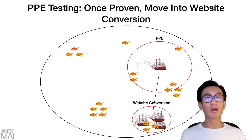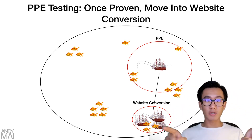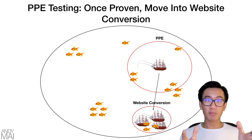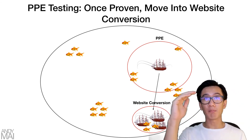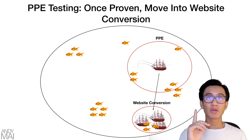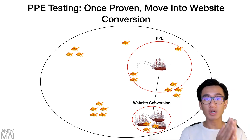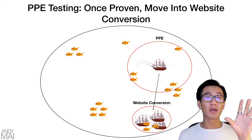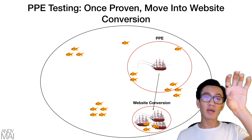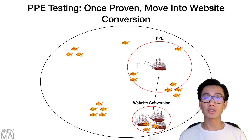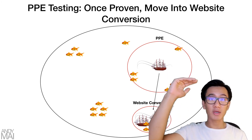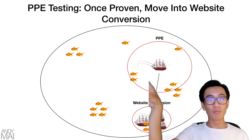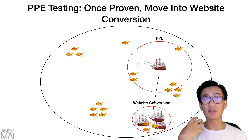That's why it's actually better to do PPE testing first. Put your ship into the 54 million circle and see if there are any surrounding fish within the PPE market. You'll reach a large audience at a much cheaper price, and based on PPE cost per click and click-through rate, you'll know whether this is a worthy interest to move your ship into website conversion. So you should start with PPE testing for all these different interests, and then move the ones that perform well into website conversion — this will save you a lot of money.